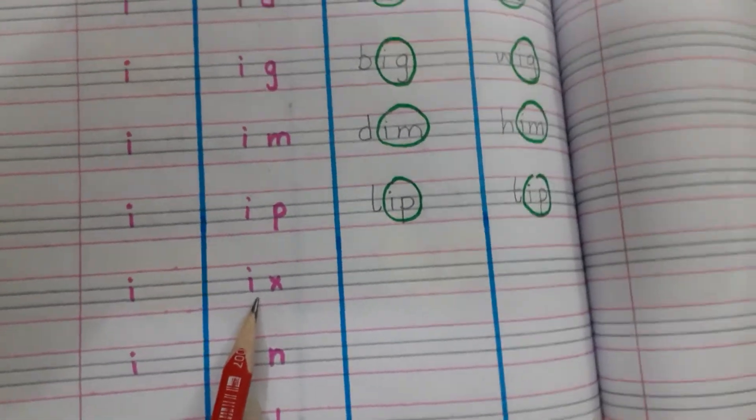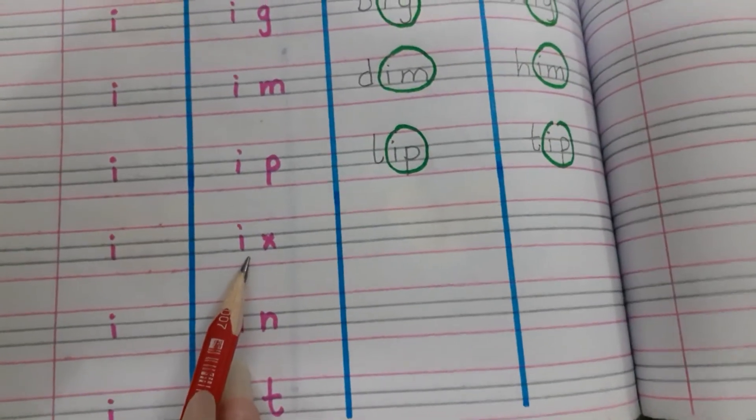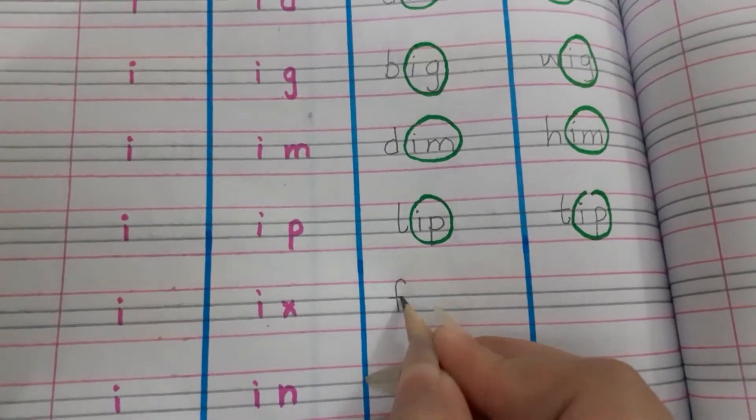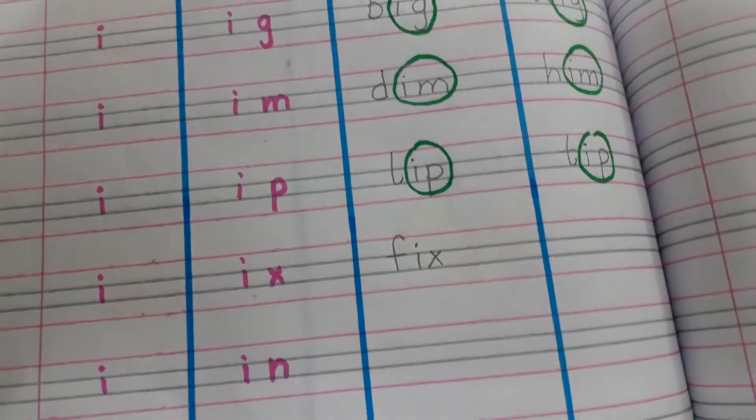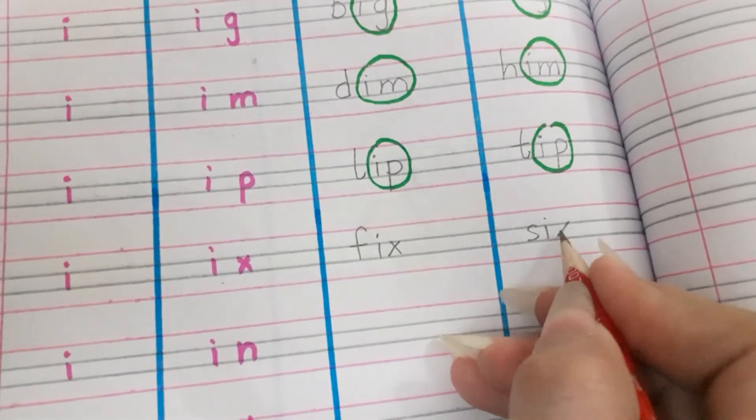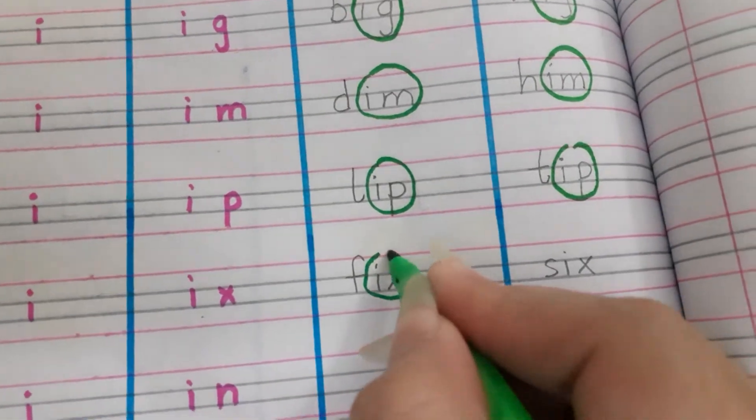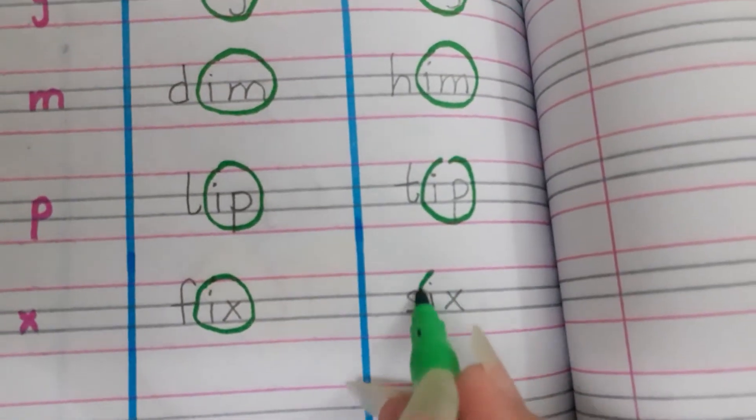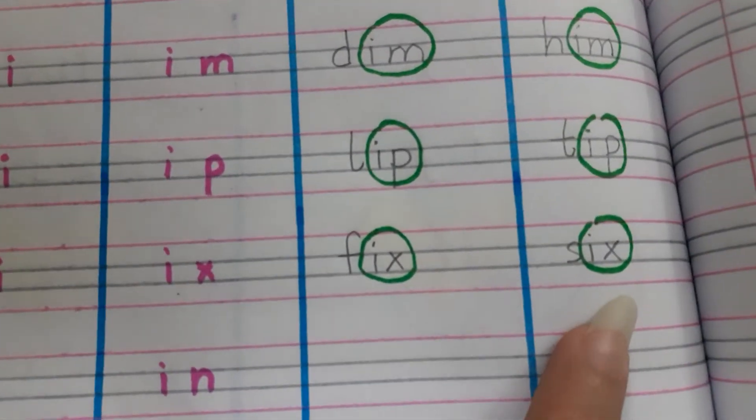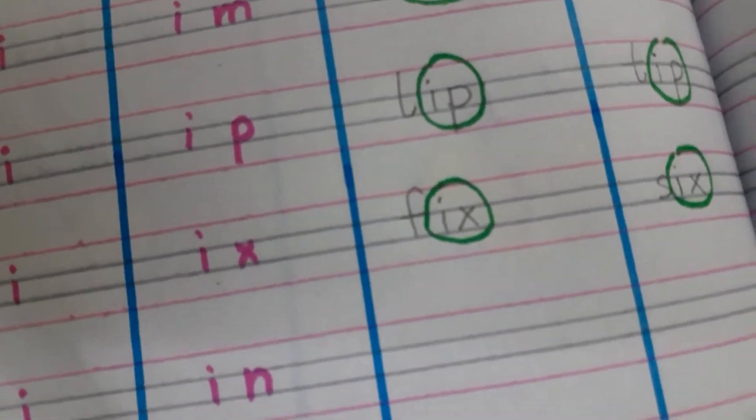Next, ix. Which sound is this? Ix. So the rhyming words of ix are fix and six. Now read it: ix, fix, six. All are the rhyming words because they are same in sound.